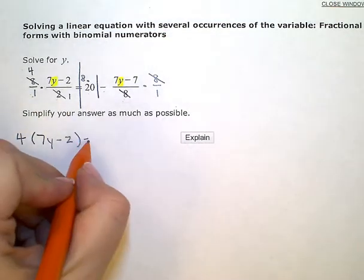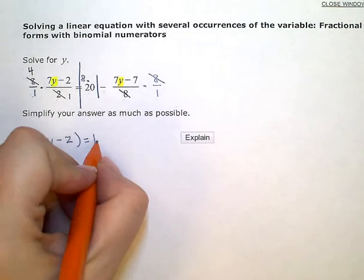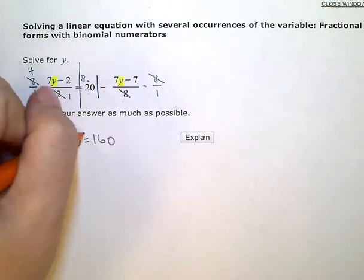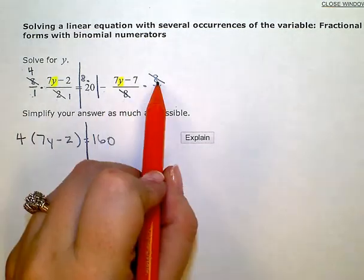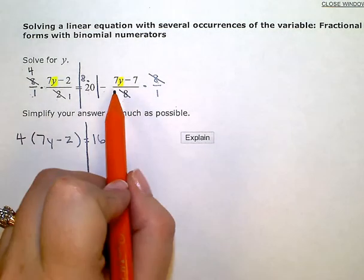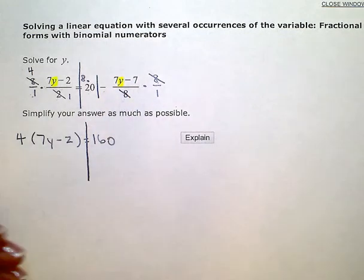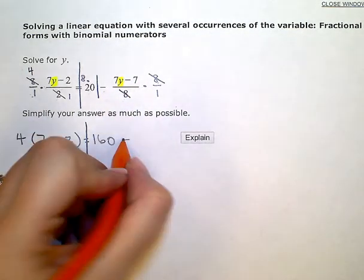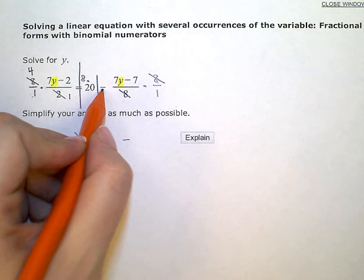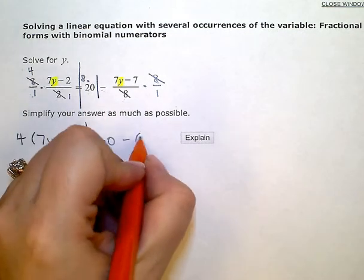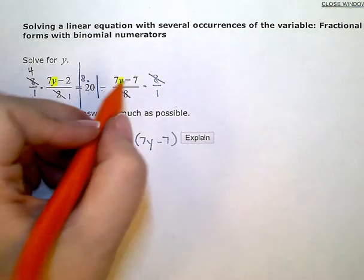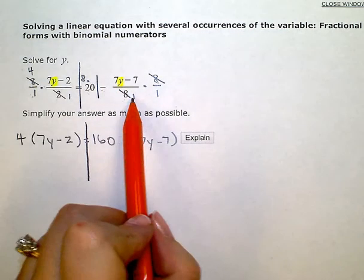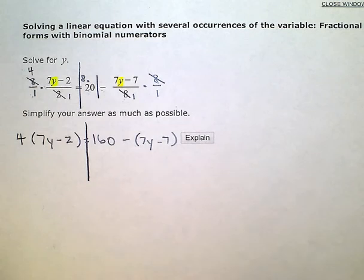Equals, 8 times 20 is 160. And then over here, the 8 completely canceled with the 8. As a numerator, all I'm left with is minus, and I have to subtract this whole 7y minus 7. And on the bottom, I just have 1 times 1. So, we can leave that off now.